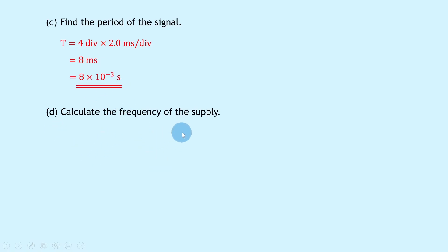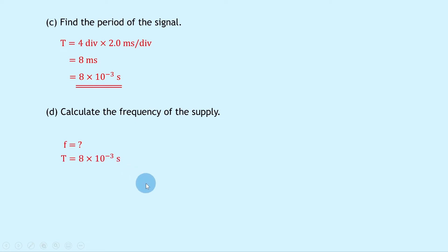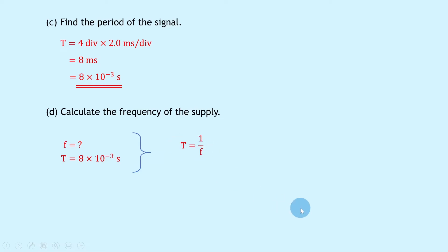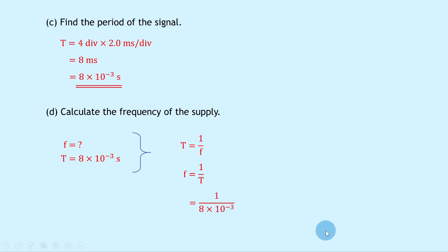Part D says to calculate the frequency of the supply. We know the period is 8 × 10⁻³ seconds. Using T equals 1 over F, rearranging gives F equals 1 over T. Substituting in, we get 1 over 8 × 10⁻³, which gives an answer of 125 hertz.